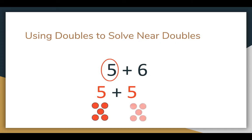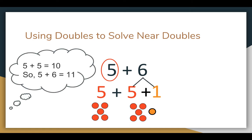I know that five plus five is ten. Since I need to get to six, I need to add one more to five. So five plus five plus one more is ten plus one. In my mind, I'm thinking that if five plus five is ten, I need one more to get to that six. So five plus six equals eleven.